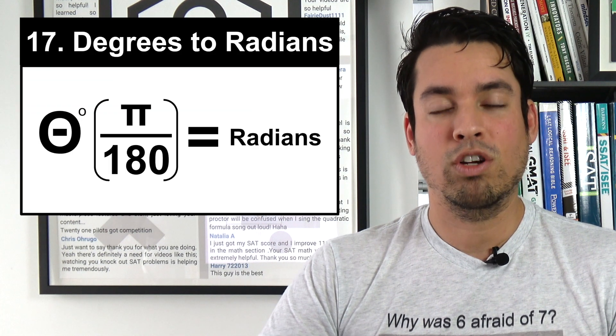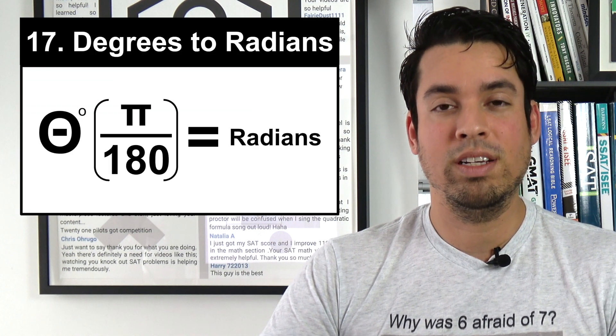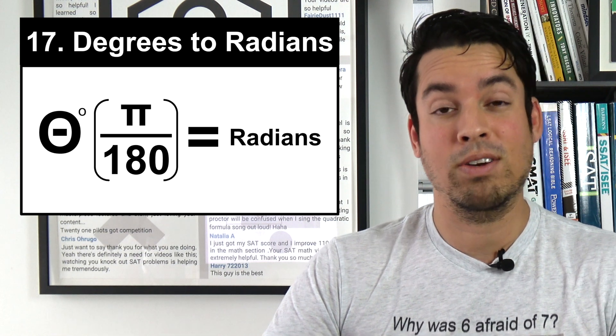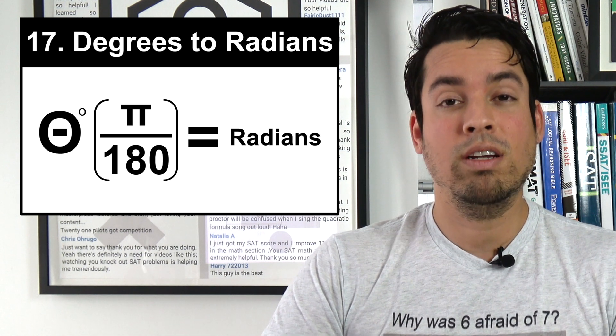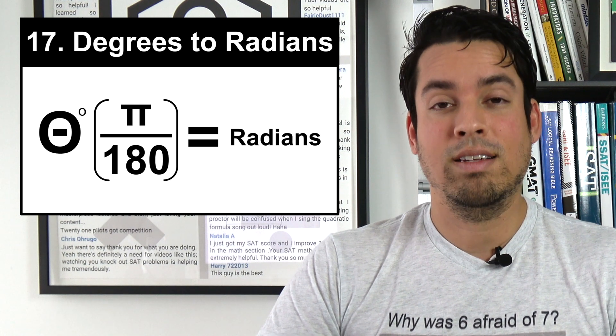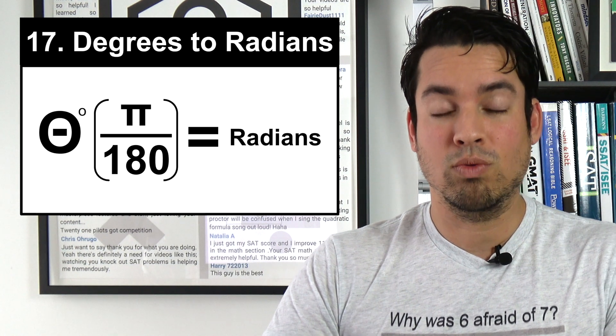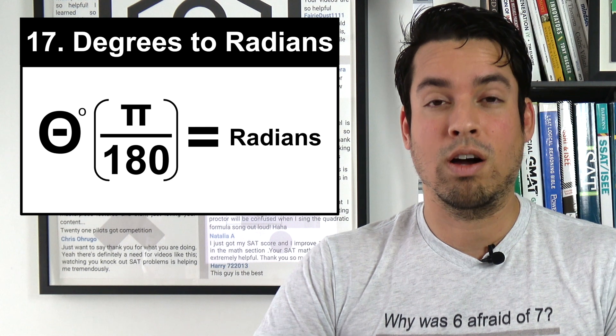Next we have our conversion formula from degrees to radians. Degrees and radians are sort of like Fahrenheit and Celsius. If I want to convert degrees to radians, I simply do the value of the degrees times π over 180.